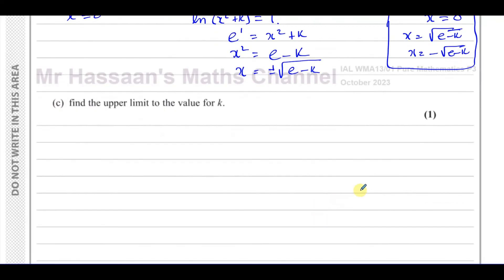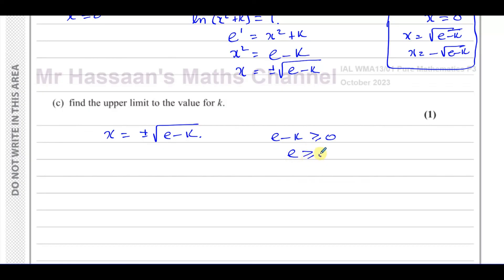For part c, find the upper limit for k. We have x = ±√(e − k), and this is undefined if the expression under the square root is negative. So e − k must be ≥ 0, meaning k ≤ e. If k exceeds e, the square root becomes undefined. Therefore, the upper limit for k is e.